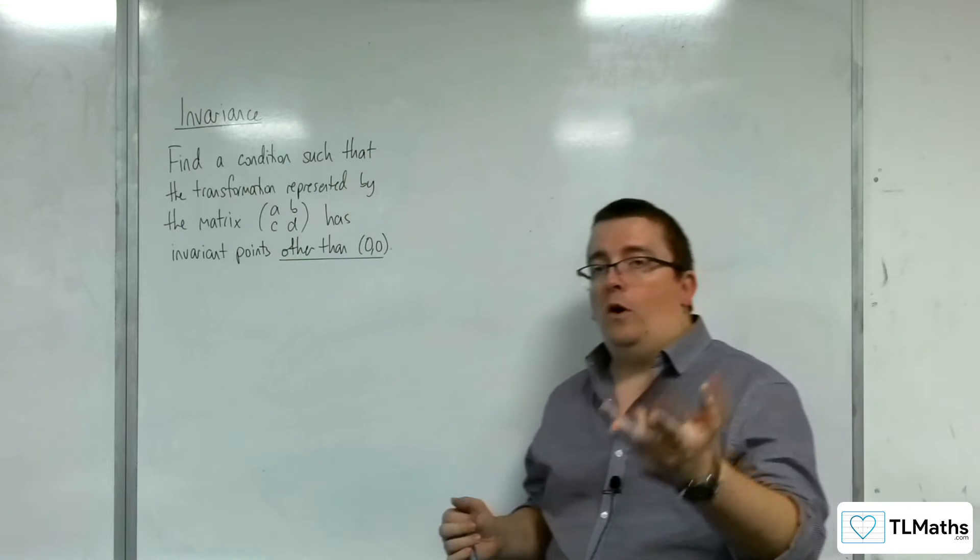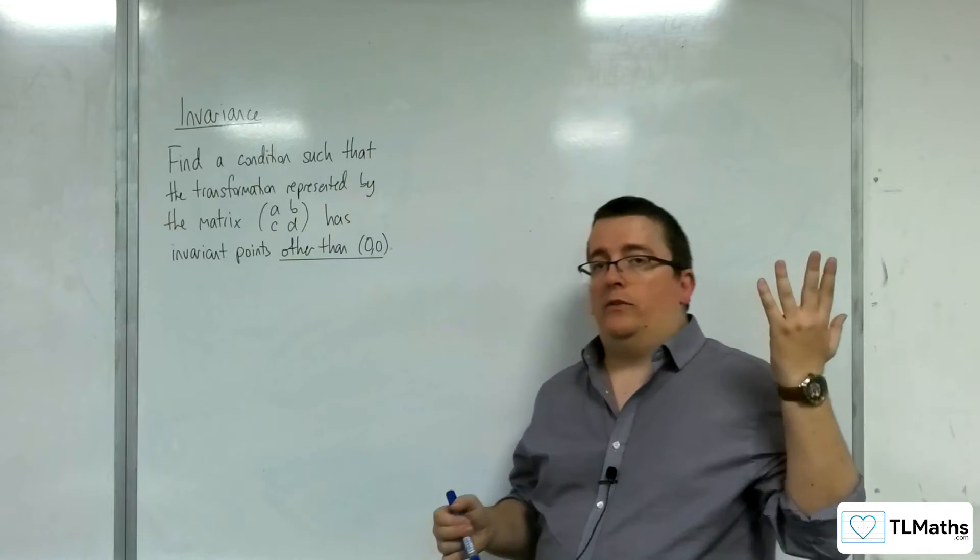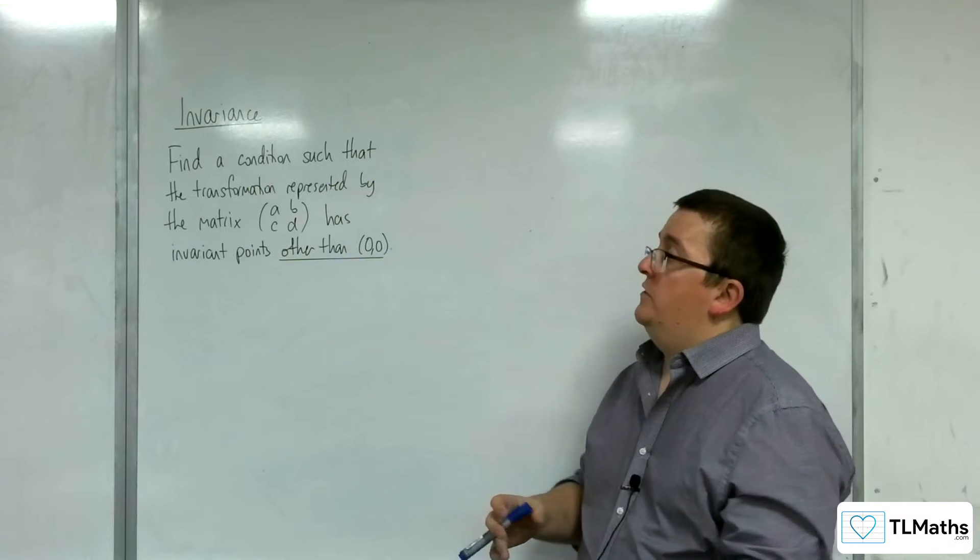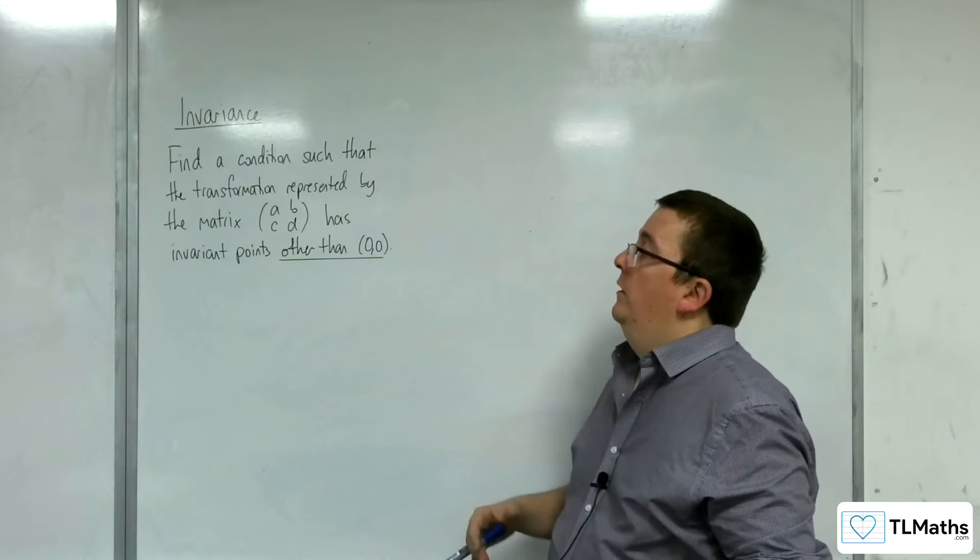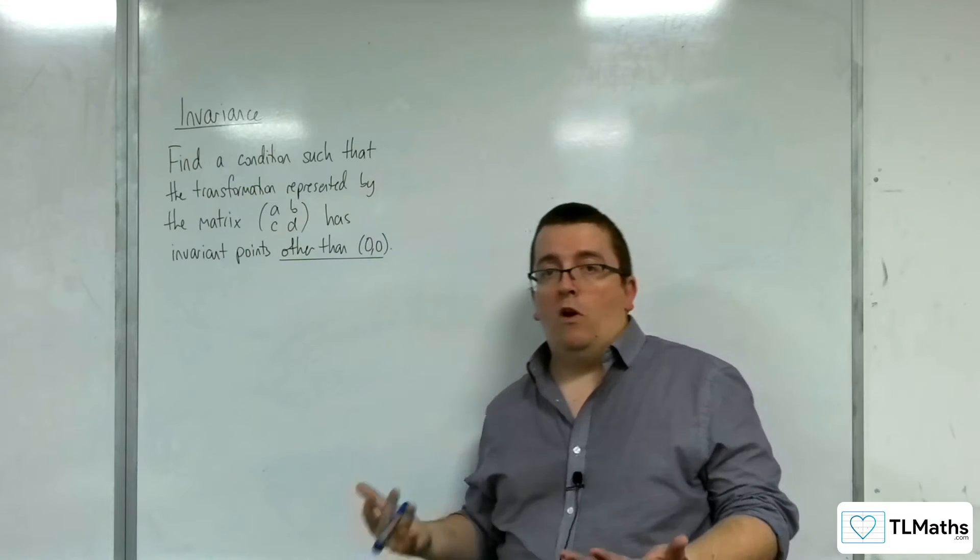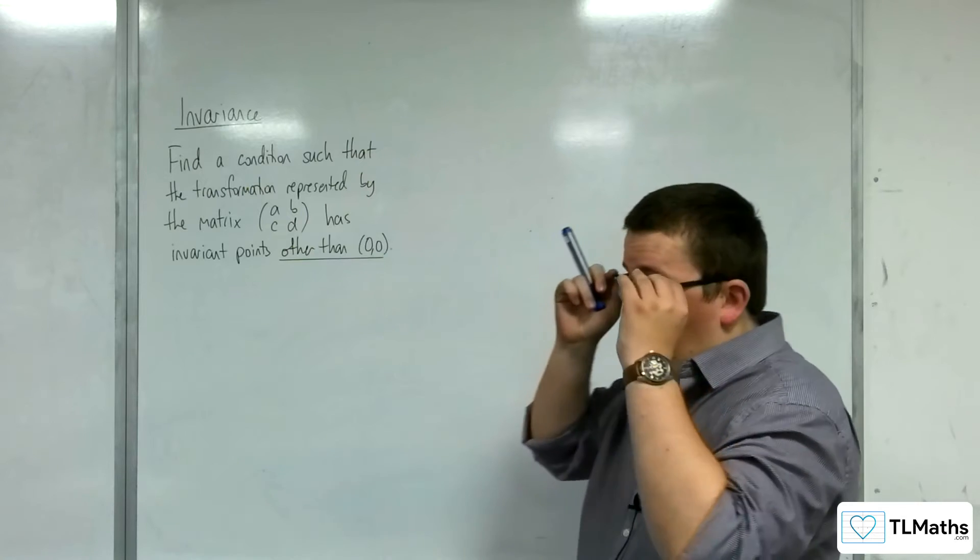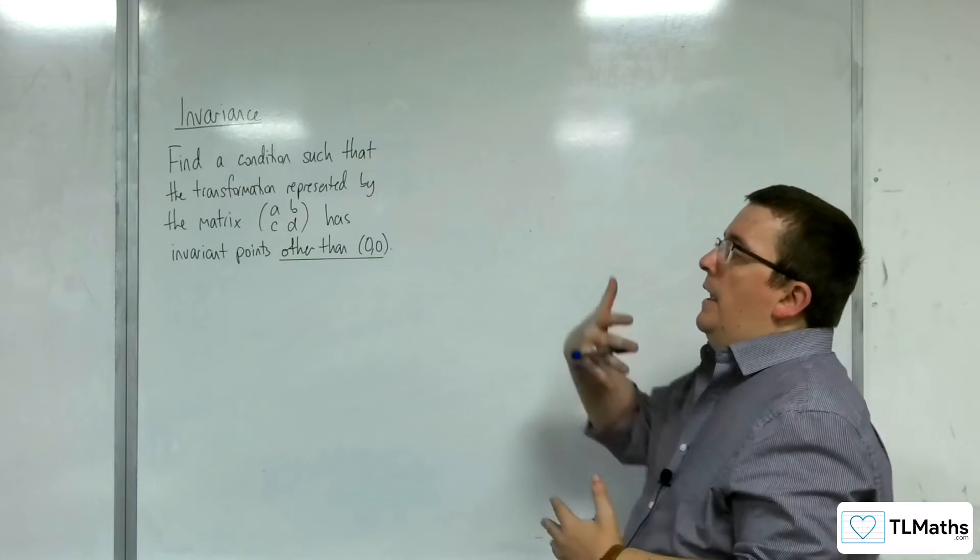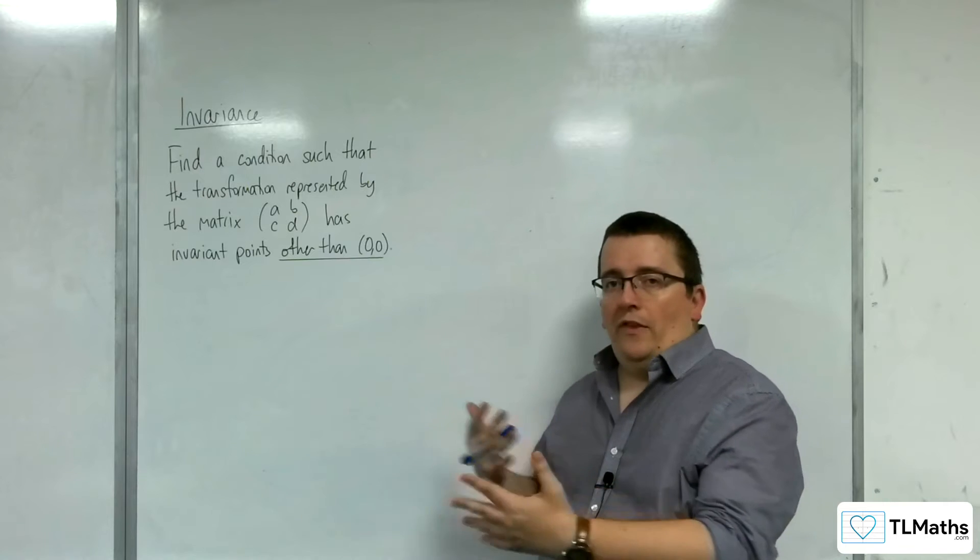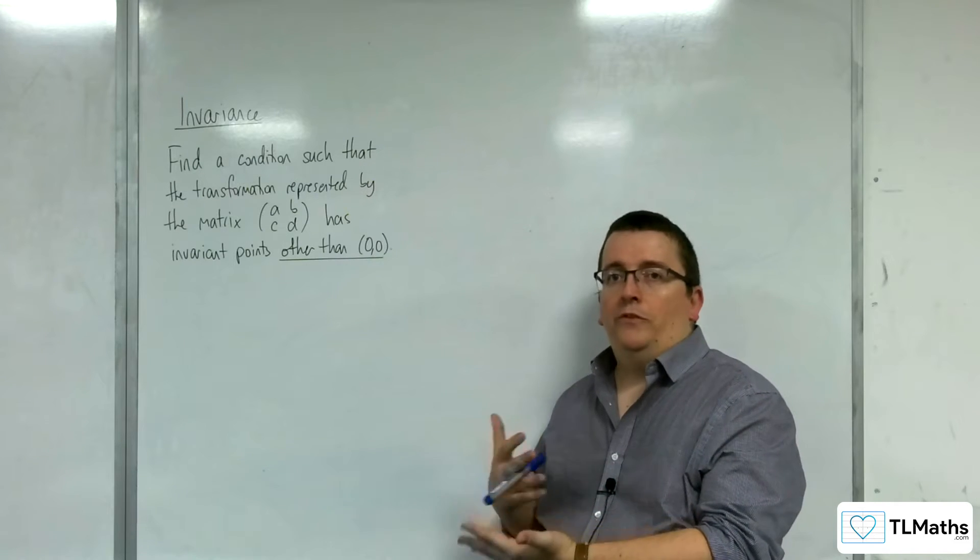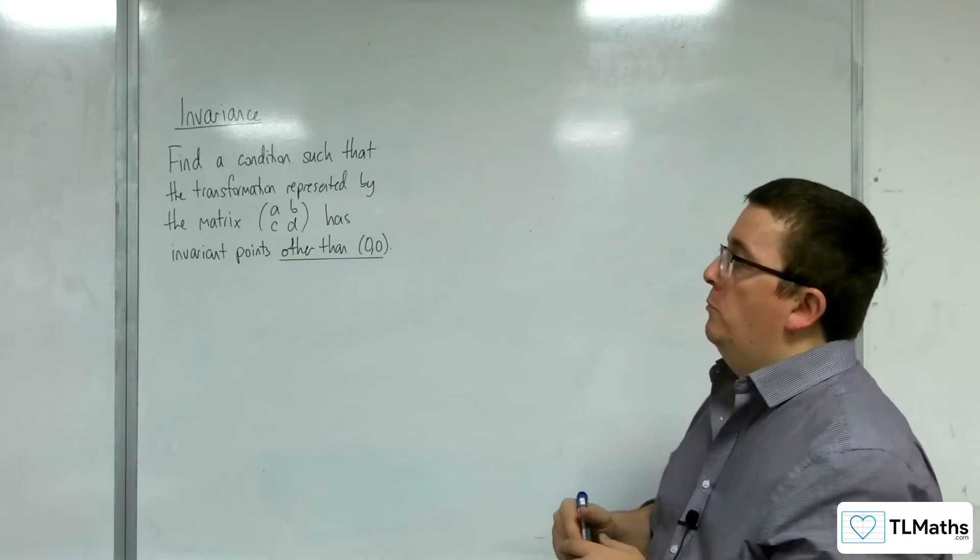We know that for any 2x2 matrix that represents a graph transformation, then (0,0) will be an invariant point. So is there a way of predicting whether a matrix will have points other than (0,0) as an invariant point?